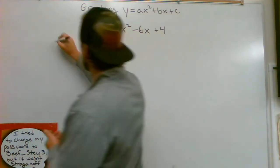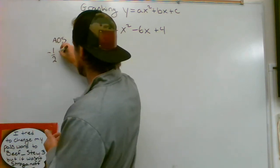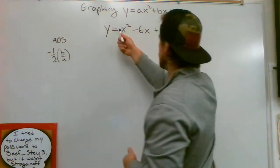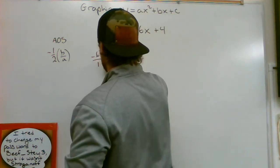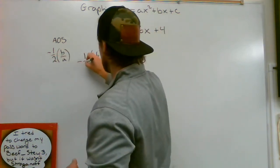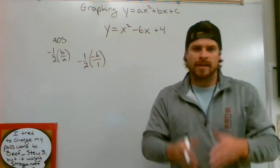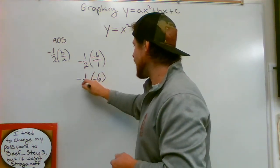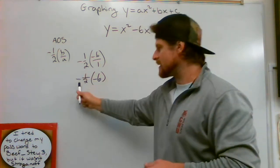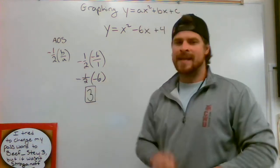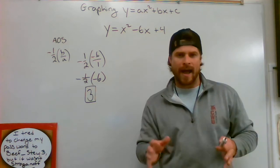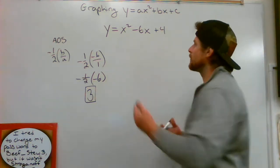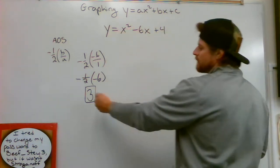The axis of symmetry is negative one-half times b divided by a. So I'm going to take negative 6 divided by 1 — there's no number there but it really is a 1, it's a ghost number. So negative 6 divided by 1, multiplied by negative one-half. Negative divided by positive is negative, and negative 6 times negative one-half gives us a positive 3. My axis of symmetry is 3 to the right because it's a positive 3. If this number ends up being negative, it means to the left.